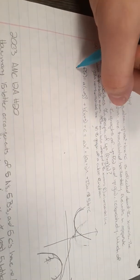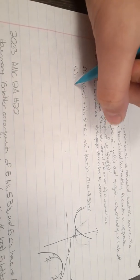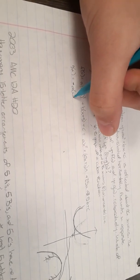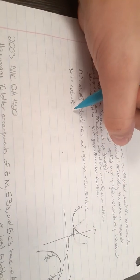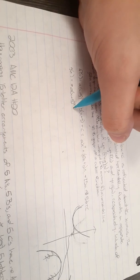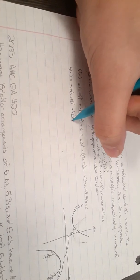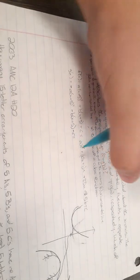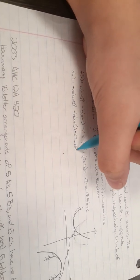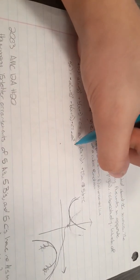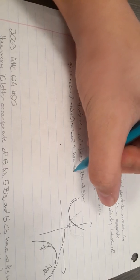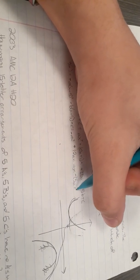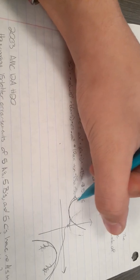We're also going to have g of x equaling negative a times x minus 5 squared minus b times x minus 5 minus c, which is going to be minus ax squared plus 10a minus b times x minus 25a plus 5b minus c.